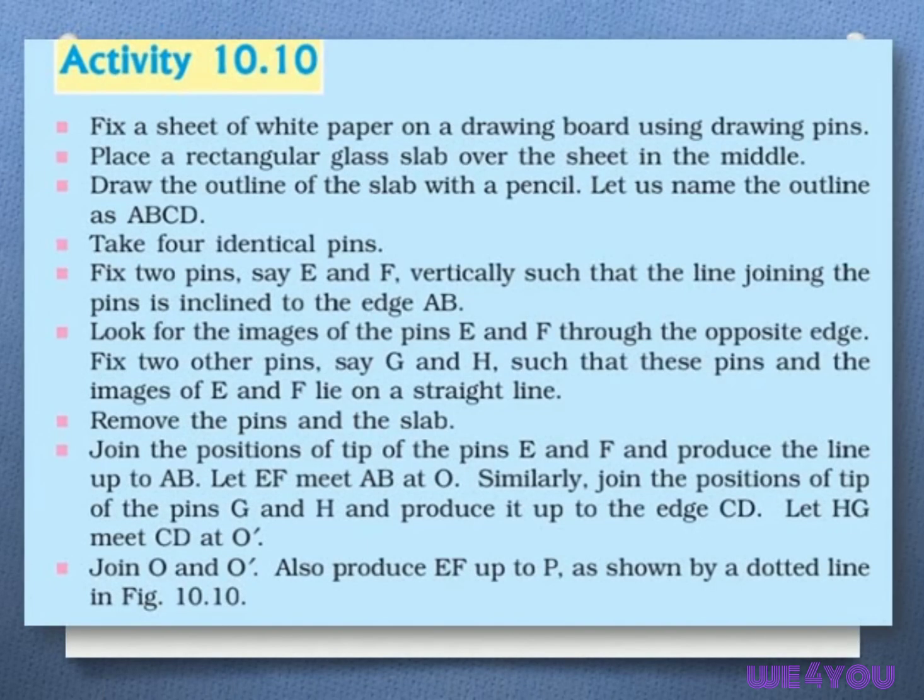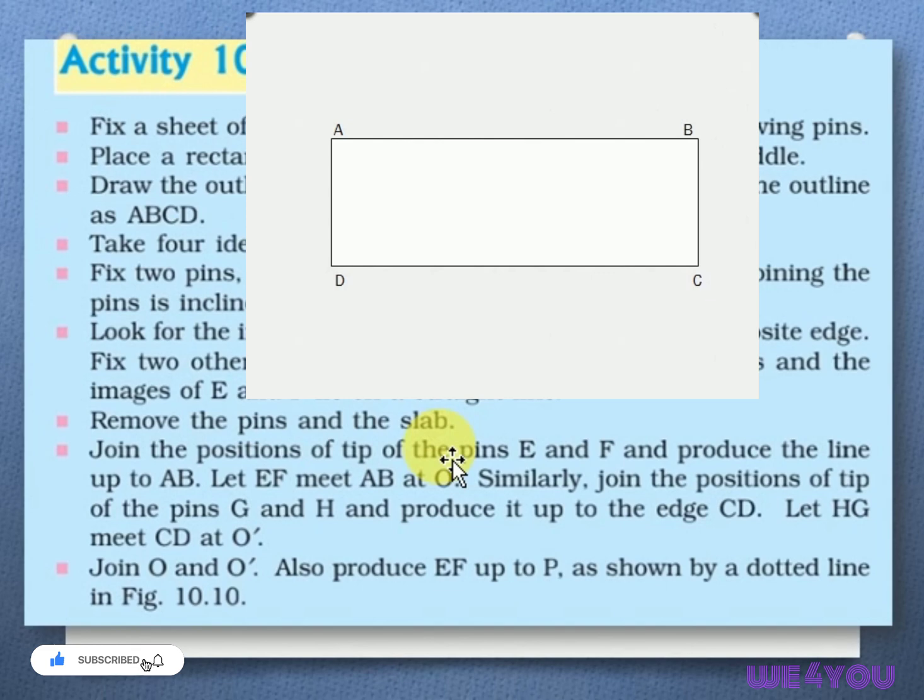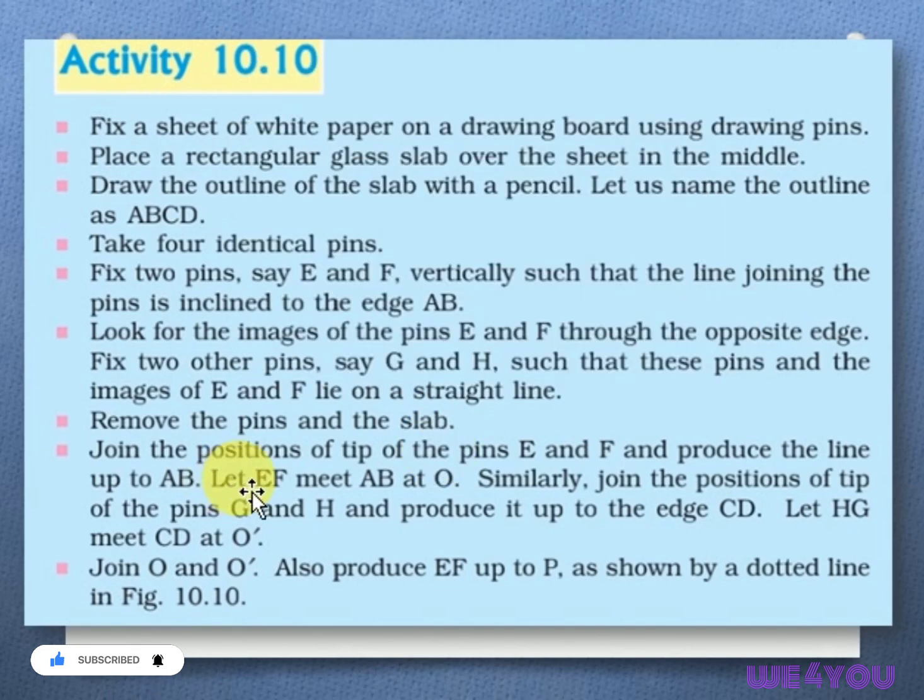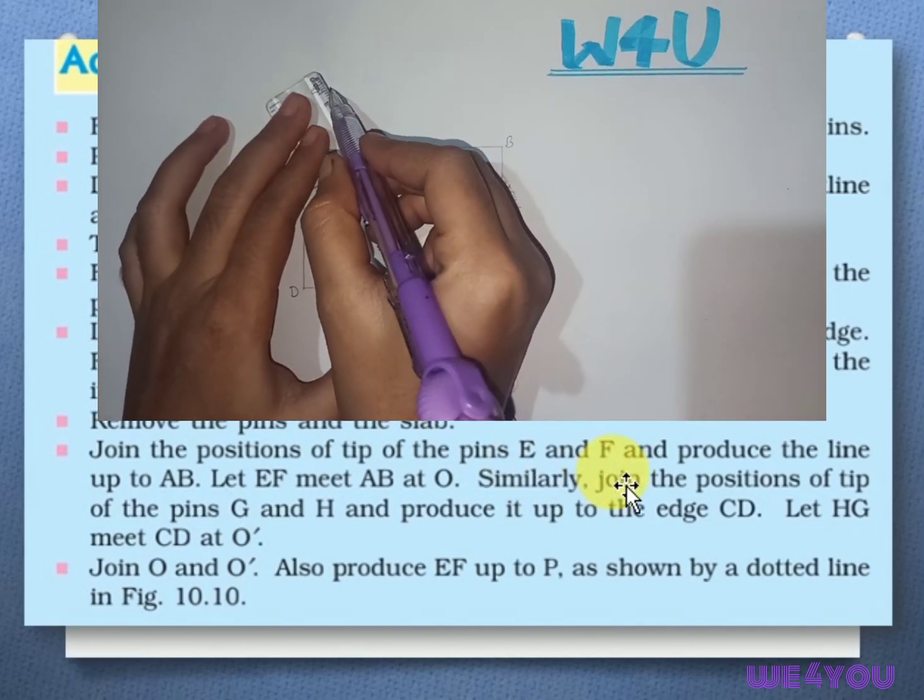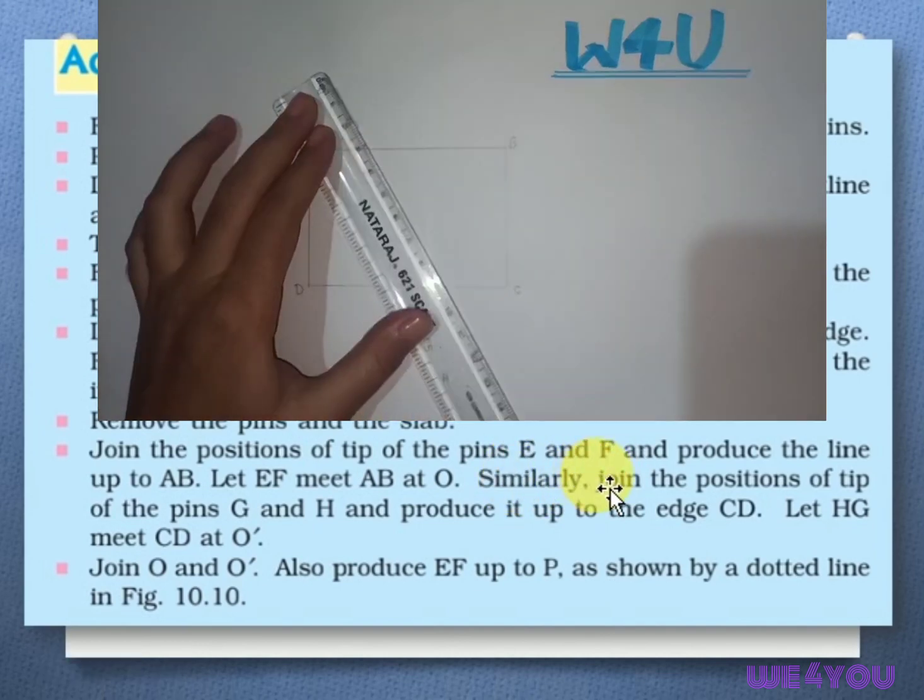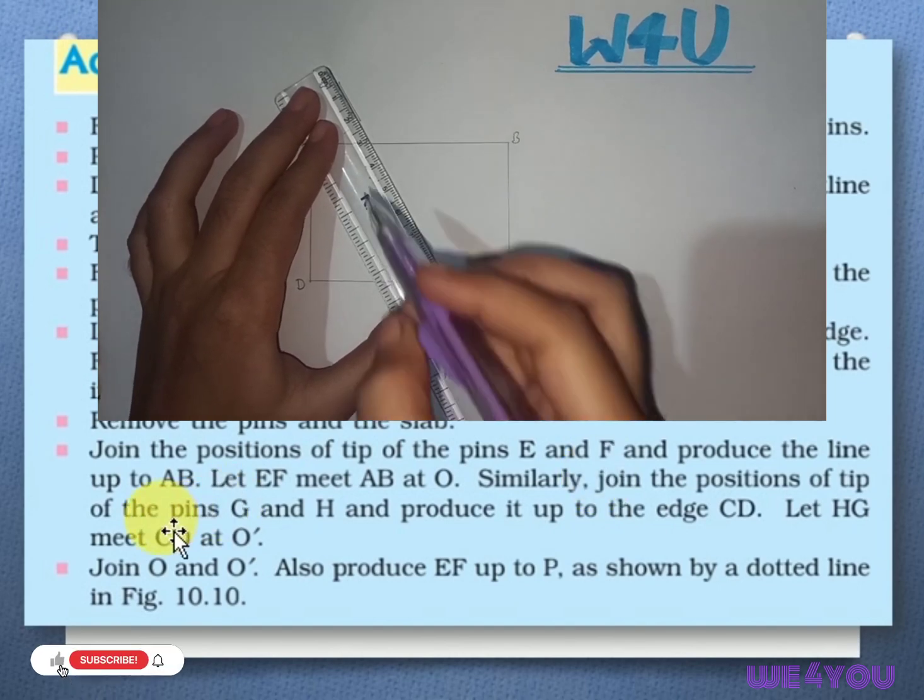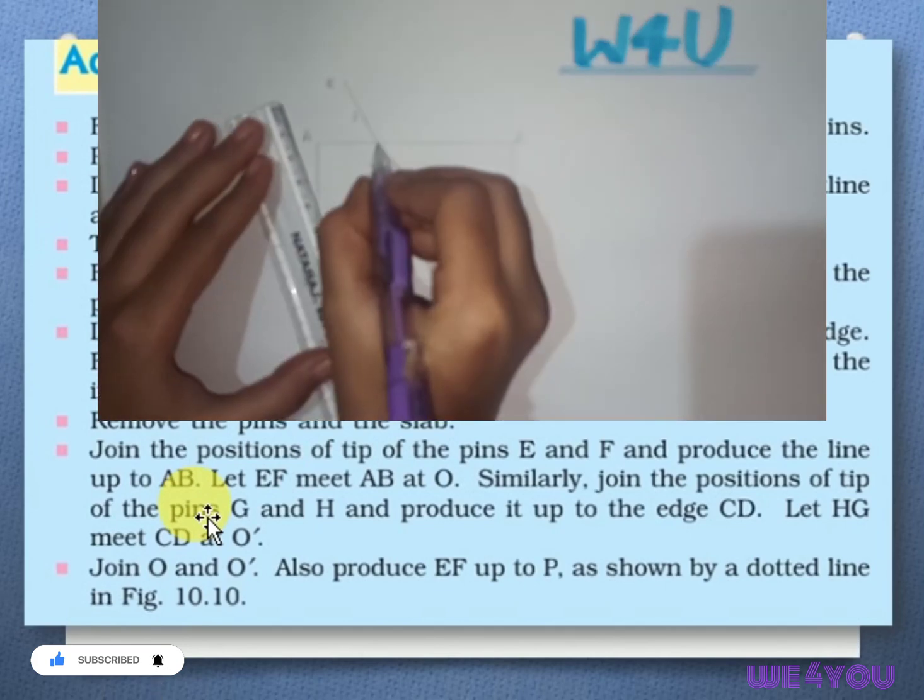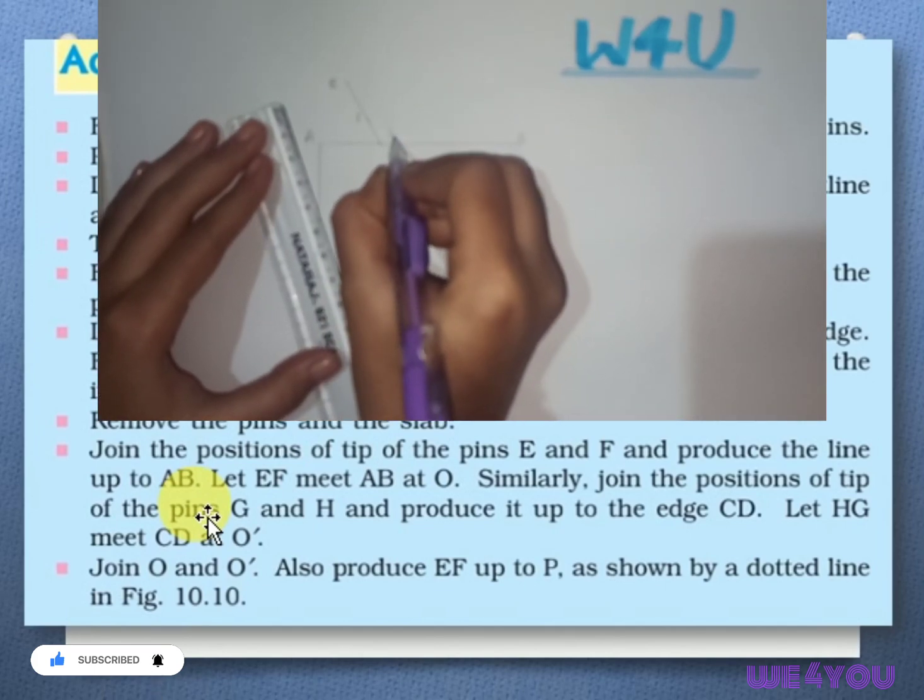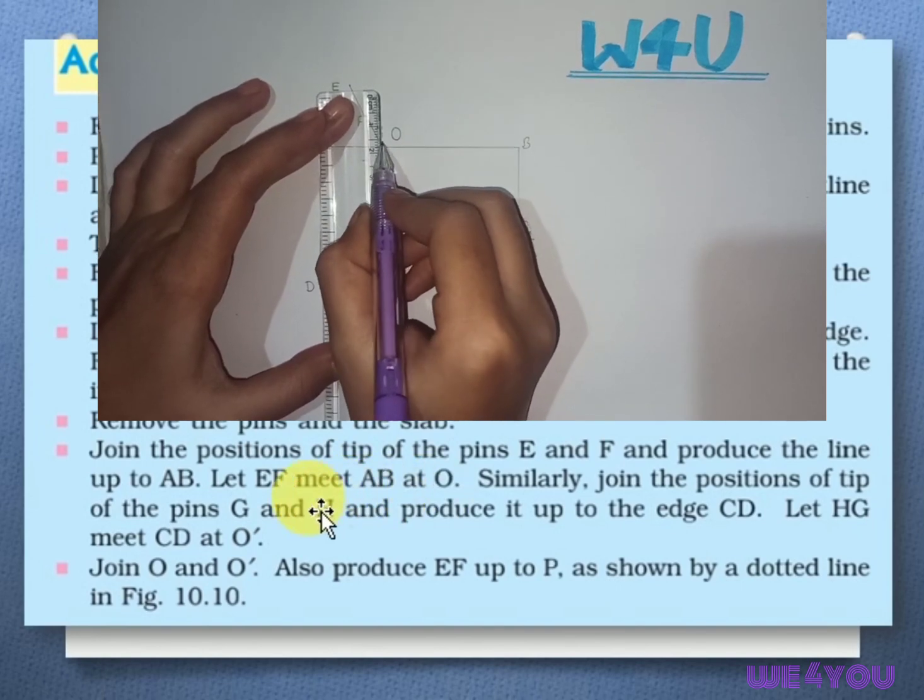Now, remove the pins and glass slab. Then, join the tips of the pins E and F. We have to join the tip of the pins E and F and proceed the line up to AB. Join the line further ahead of the pins E and F. Let EF meet AB at O.